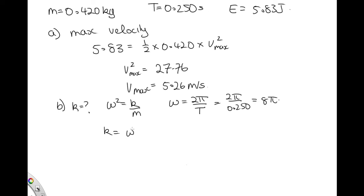So k will equal omega squared times m, which will be 64π squared times 0.420. Solving that on the calculator, we end up with 265 newtons per meter.